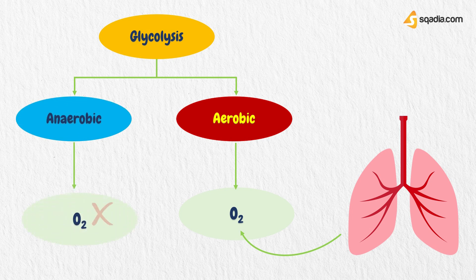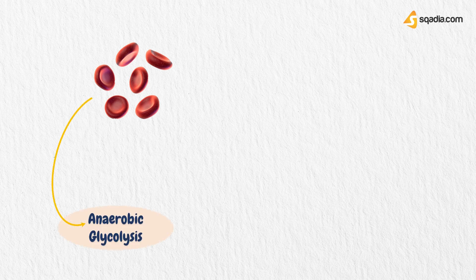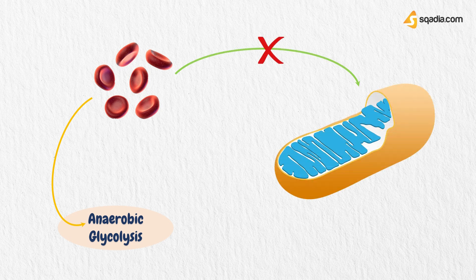These red blood cells bind oxygen to form oxyhemoglobin, and although they carry plenty of oxygen, ironically they cannot use this oxygen themselves and are entirely dependent on anaerobic glycolysis for fuel, because they lack mitochondria and the enzymes for the Krebs cycle.